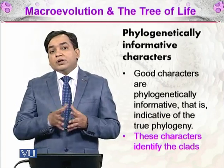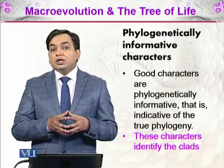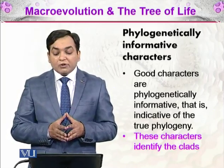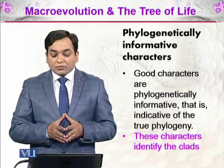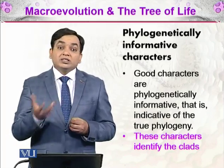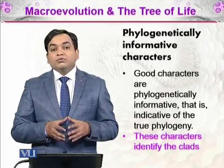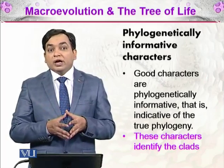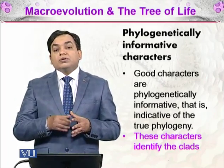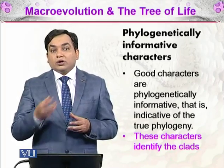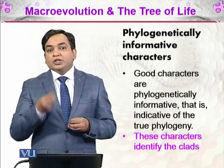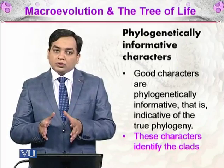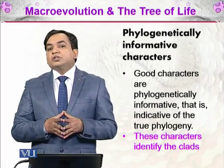Some characteristics tell us that an organism belongs to a particular clade or branch — these are called phylogenetically informative characteristics. For example, wings are very phylogenetically informative for birds. If organisms have feathers and wings, you already know they are birds. Such characteristics identify the clades; organisms that have wings will be in a similar clade, just like birds.